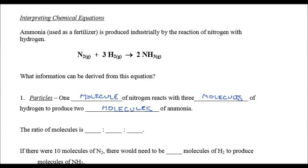So the ratio of the molecules is one to three to two. If there were ten molecules of nitrogen, this is the ratio thing. There would need to be thirty molecules of hydrogen to produce twenty molecules of ammonia. So all we're going to do in this chapter is manipulate the coefficient in front.